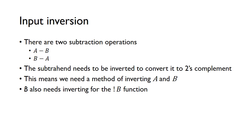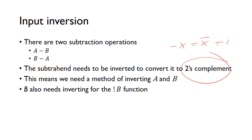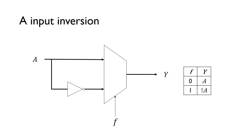Thinking ahead to the subtraction operations — A minus B and B minus A — in each case the subtrahend needs to be inverted in order to convert it to two's complement. Remember, two's complement: minus X equals NOT X plus one. So we need to be able to invert A and B. And for the data movement operation, we also have the NOT B function, so we need to be able to invert B. We need to find ways of inverting the inputs.